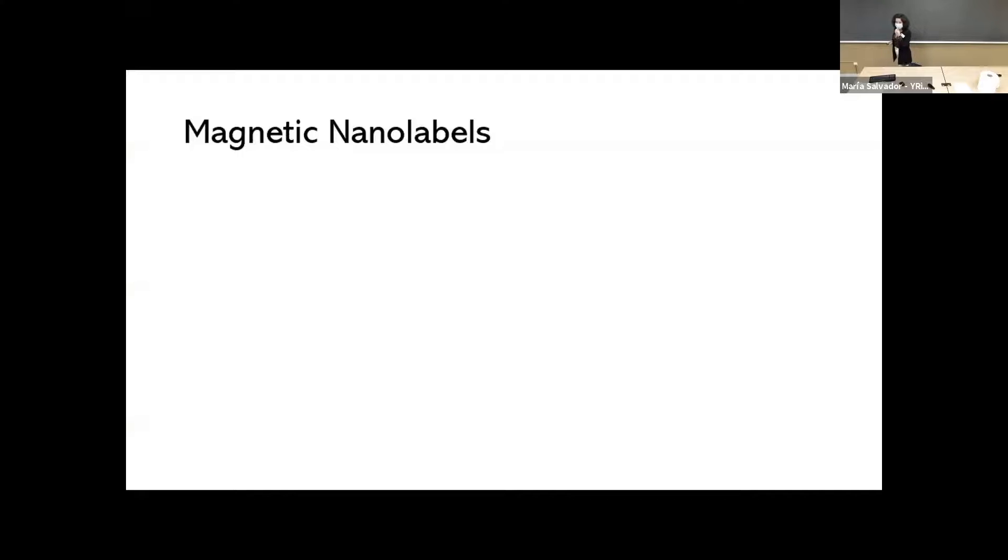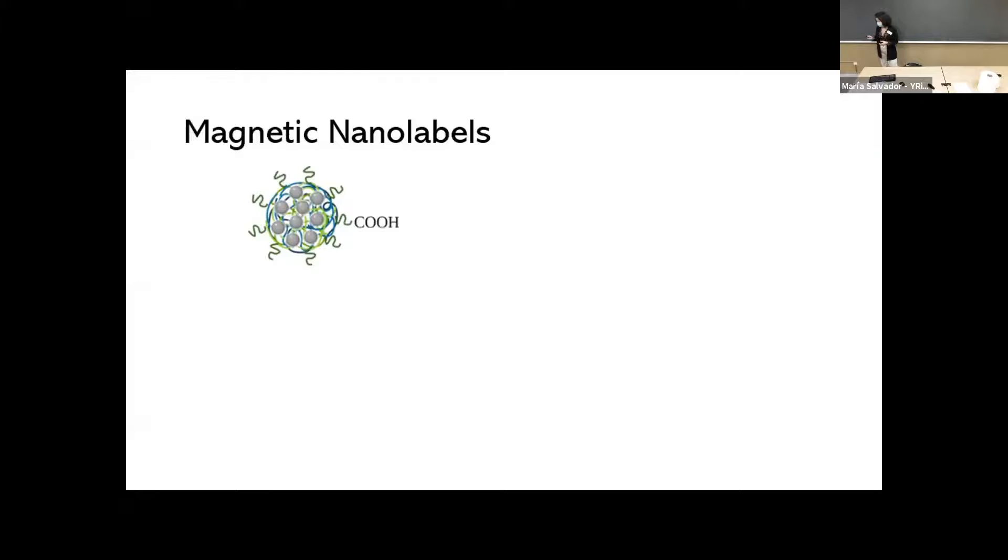Then how are we going to see this test line? We are going to use magnetic nanolabels that in this case have been synthesized by a solvothermal polyol process. You can see here that they are quite similar to the one that Mariona presented yesterday. They are clusters of about 100 nanometers and they are composed of magnetic nanoparticles of around seven nanometers. All of these particles in the clusters are gathered together by a polyacrylic acid network.